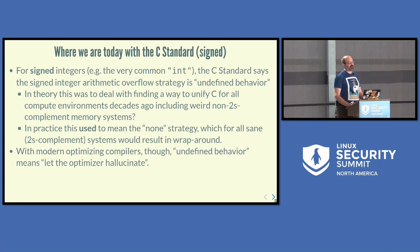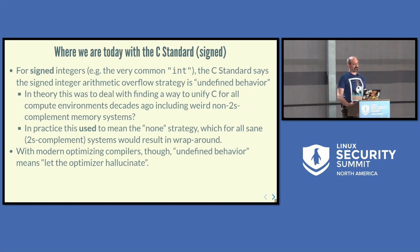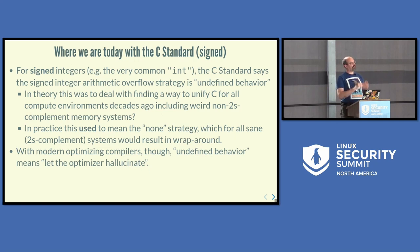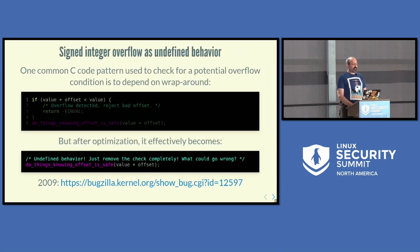Everyone loves to type 'int' in C — it's the shortest. The C standard says overflow for signed types is undefined. This was originally intended to unify C across machines that weren't all two's complement, but that's ancient history now. In practice, undefined behavior for signed overflow used to effectively mean wraparound, because that's what two's complement systems do. However, with modern optimizing compilers, undefined behavior now means the optimizer can hallucinate.